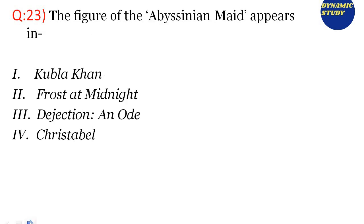Question 23: The figure of the Abyssinian maid appears in which poem? Option 1: Kubla Khan. Option 2: Frost at Midnight. Option 3: Dejection: An Ode. Option 4: Christabel. All of these poems are written by Samuel Taylor Coleridge. The correct answer is Kubla Khan, option number 1. It was subtitled as 'A Vision in a Dream, a Fragment.'